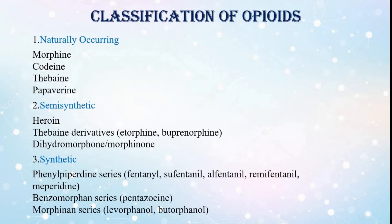Classification of opioids. First is naturally occurring: morphine, codeine, thebaine, and papaverine. Second is semisynthetic: heroine, thebaine derivatives — etorphine, buprenorphine — and dihydromorphone or morphinone.